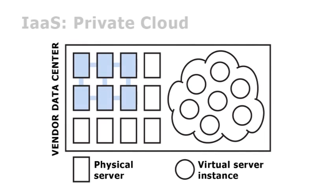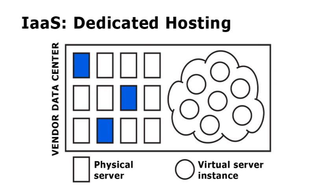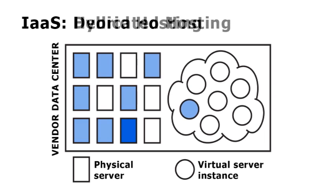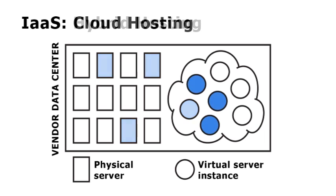Firstly, there is the most secure and costly option of the private cloud, which is where a specific number of physical servers are dedicated to one customer. Secondly, we have dedicated hosting, where a customer rents physical servers on demand with the cost and number of servers always matching their requirements. Thirdly, there is hybrid hosting, where a mix of physical servers and virtual server instances are rented on demand in an effort to reduce cost and further increase flexibility. Finally, we have cloud hosting, where a customer rents virtual server instances on demand and often on an hourly basis.